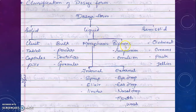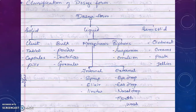Liquid dosage forms are divided into monophasic and biphasic. Monophasic consists of only a single liquid phase — examples are syrup, elixir, linctus, mouthwash, and gargles. Biphasic means two phases — after shaking the bottle you can see solid particles in the liquid, so it is called biphasic. Examples are suspension and emulsion. Semi-solid dosage forms include ointment, creams, paste, and jellies.